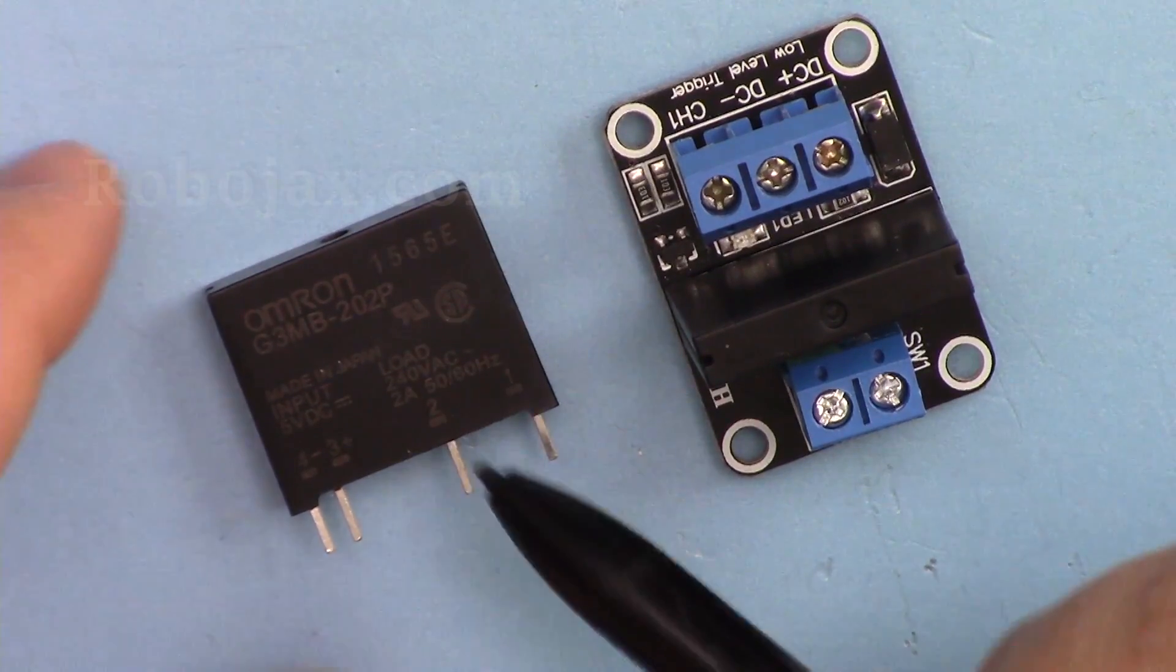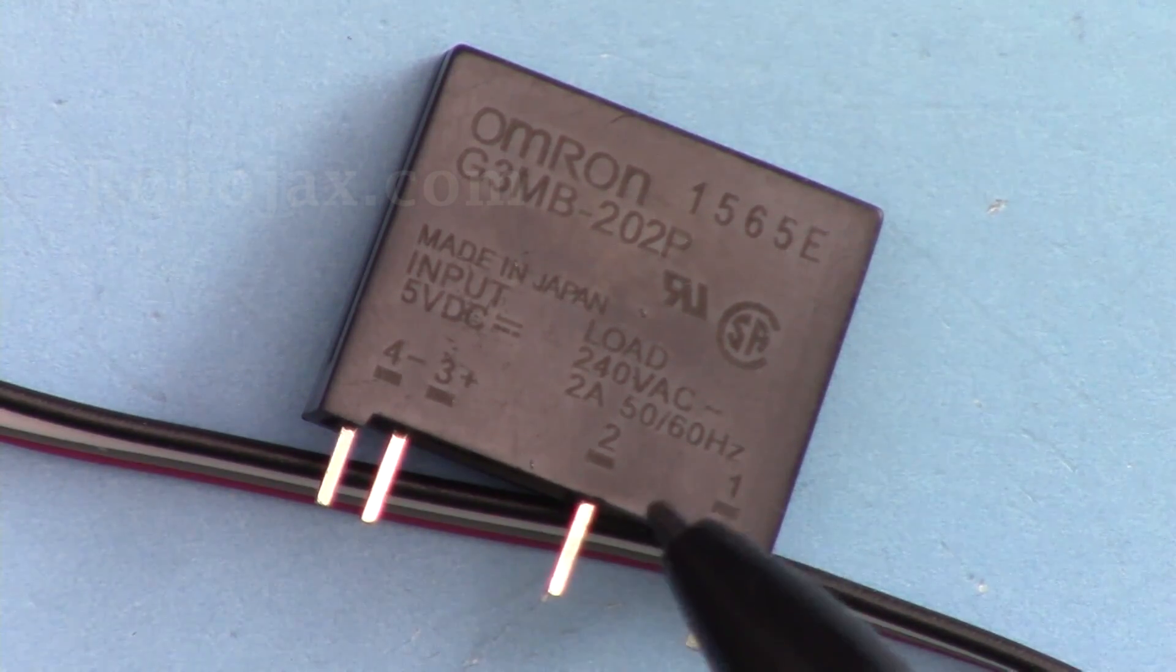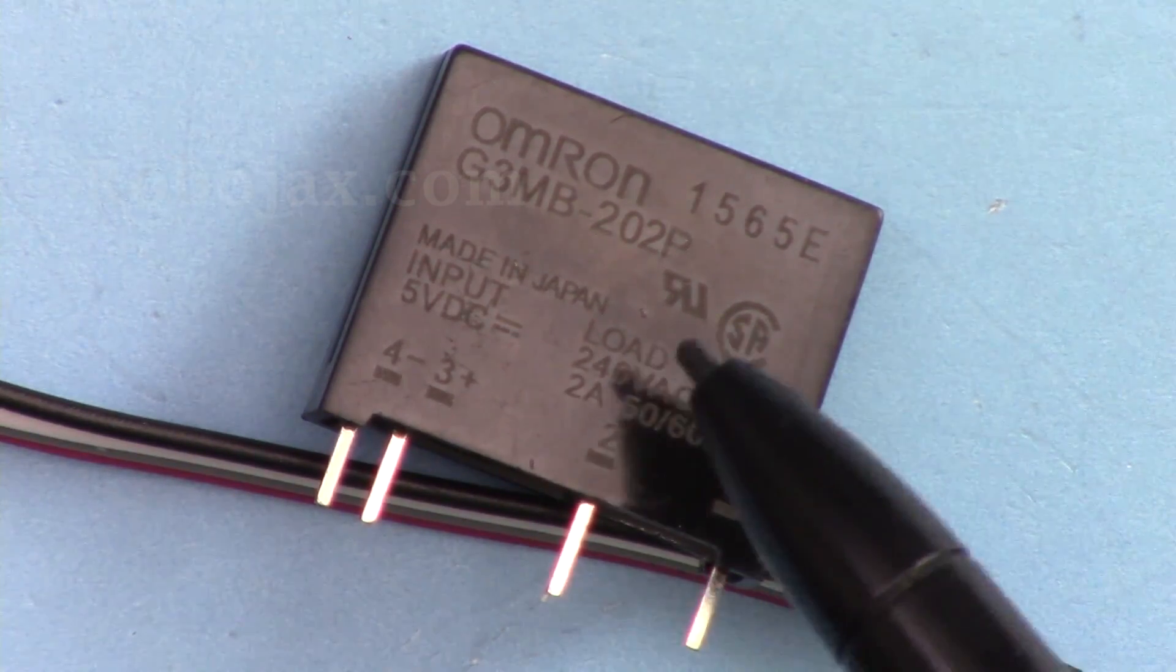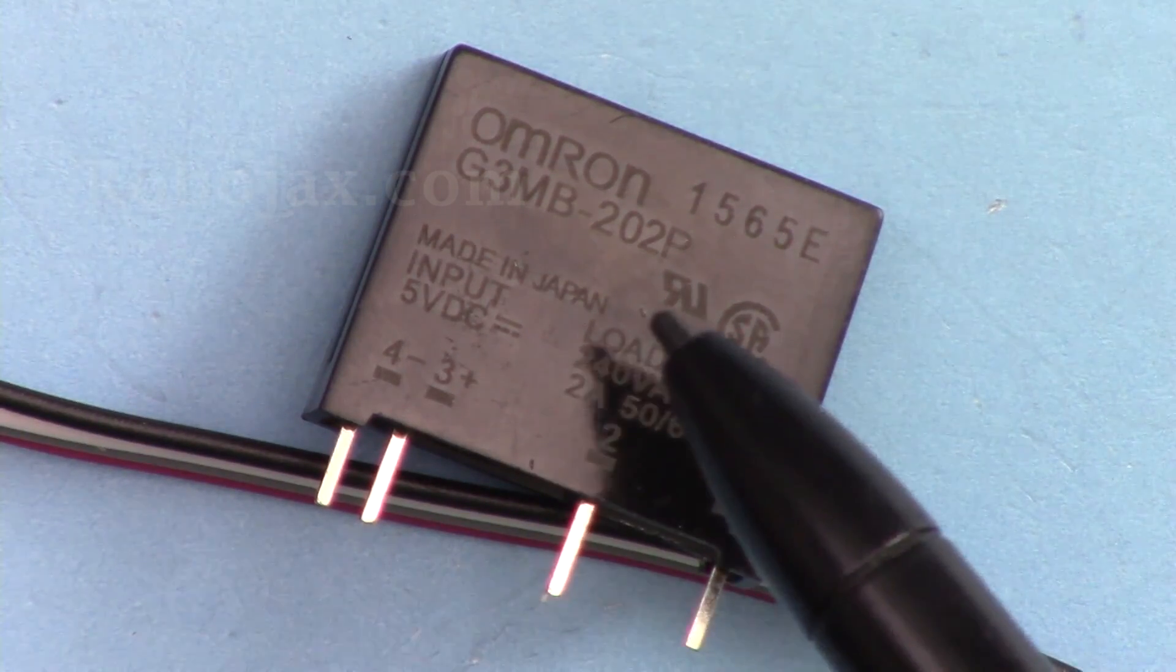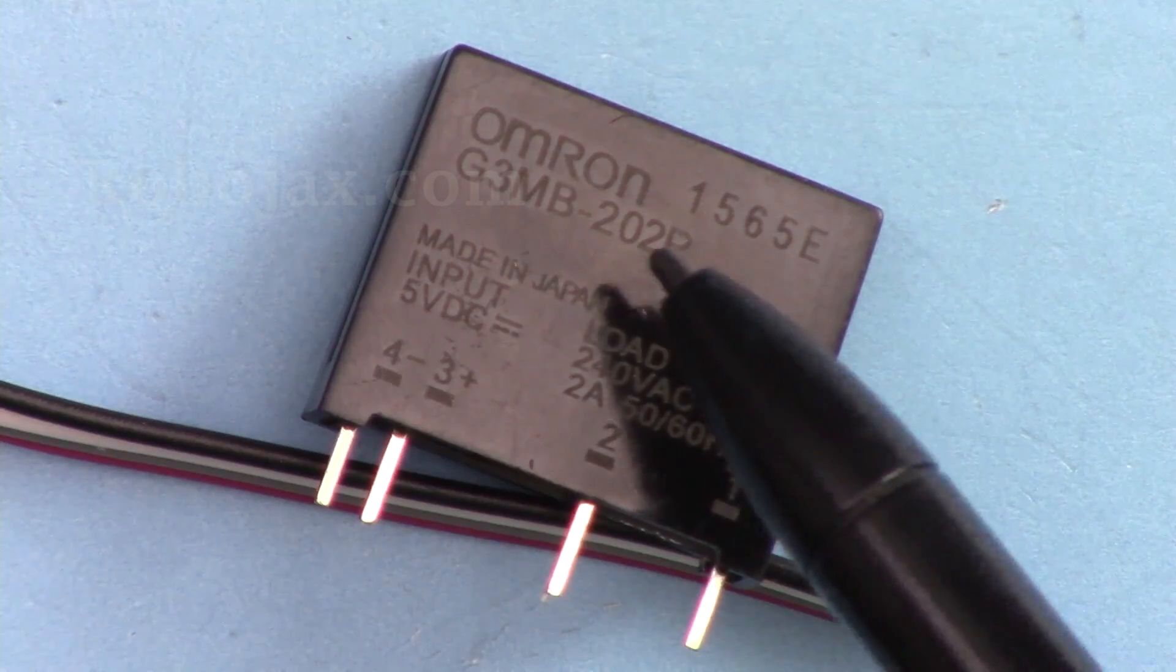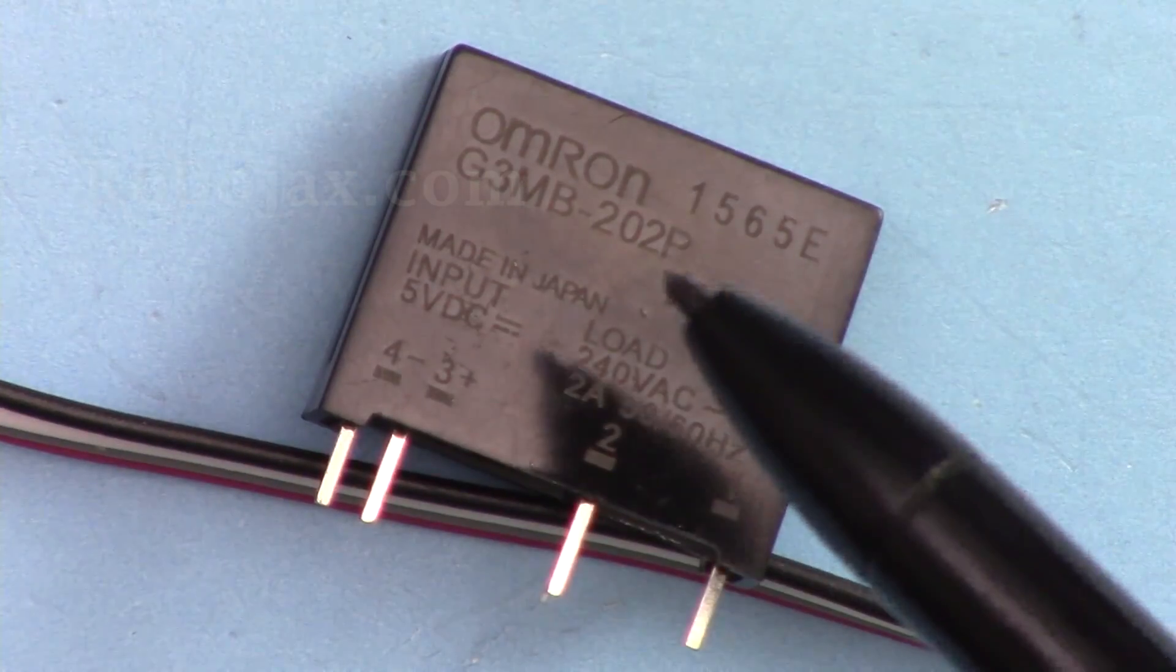This is the solid-state relay. A solid-state relay is a type of switch built on solid-state devices such as triac, thyristor, transistor, and other semiconductors instead of a mechanical switch.